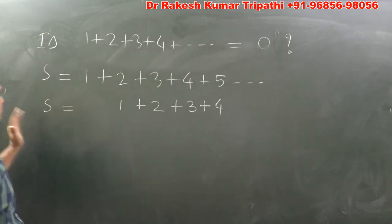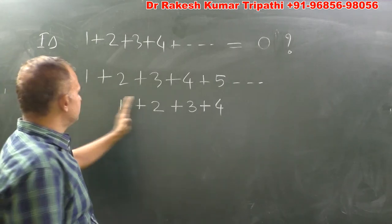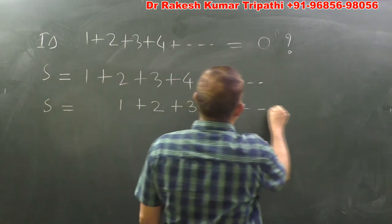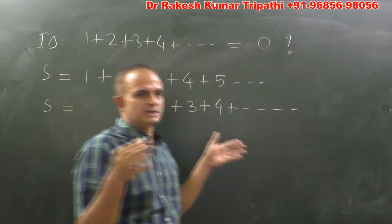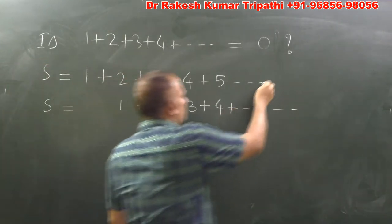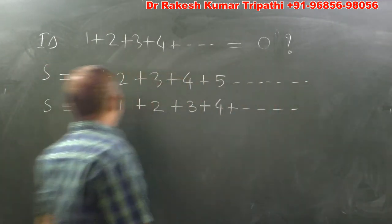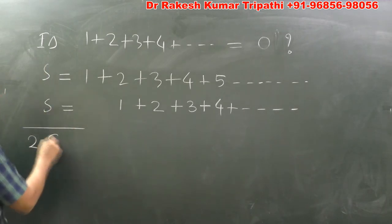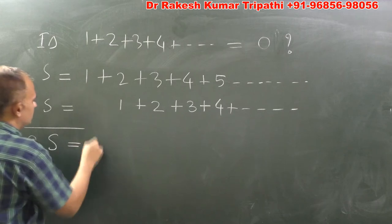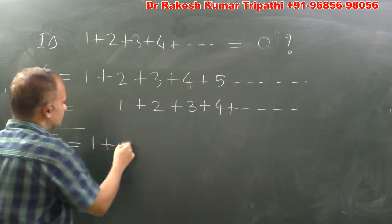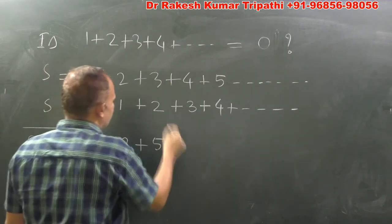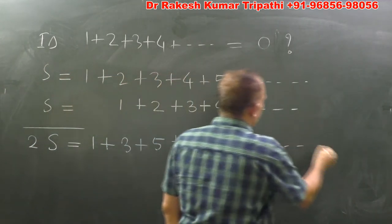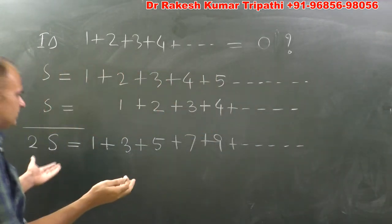Both the series are going up to infinity, so on adding these two series we find 2S is equal to 1 plus 3 plus 5 plus 7 plus 9 and so on. So I think it is clear to you what this 2S is.